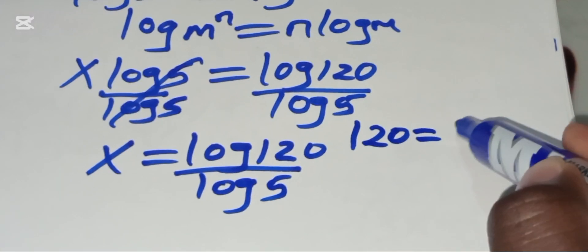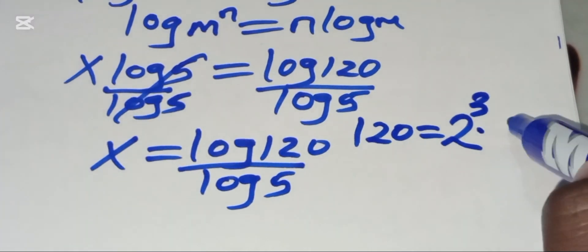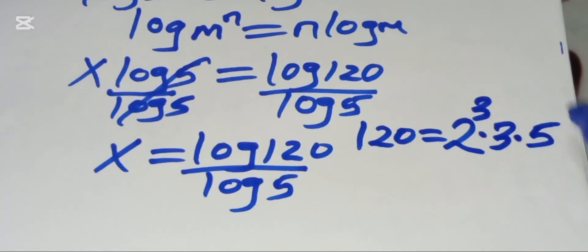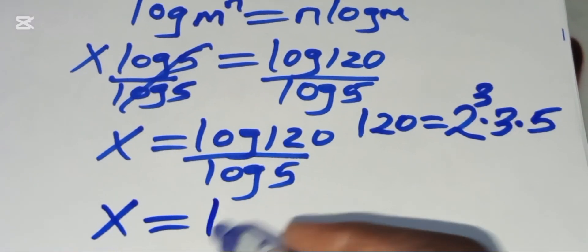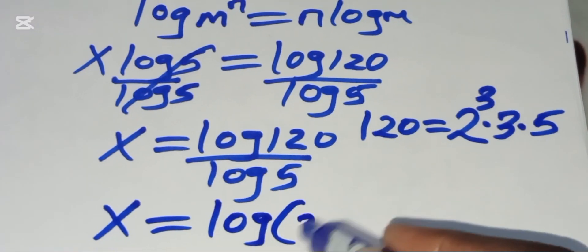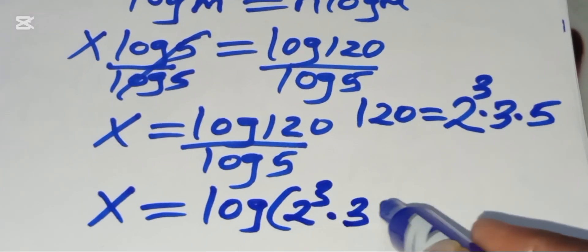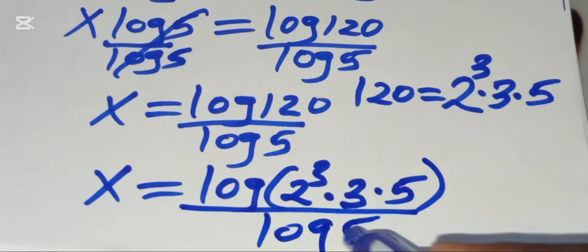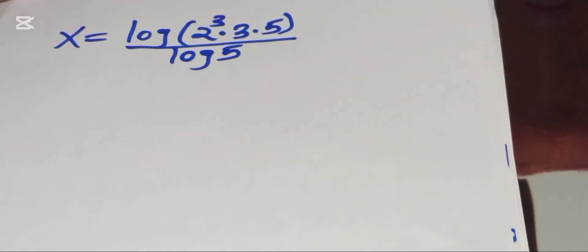Now we can express 120 as 2³ × 3 × 5. Substituting this, we have x = log(2³ × 3 × 5) divided by log(5).